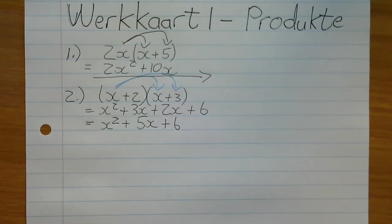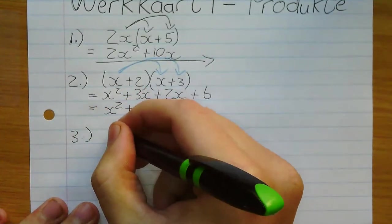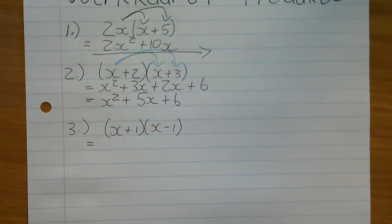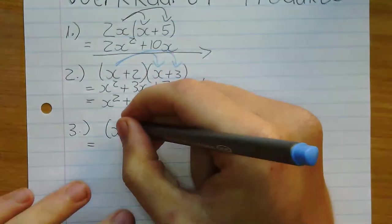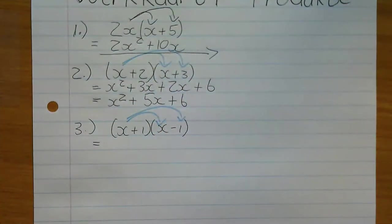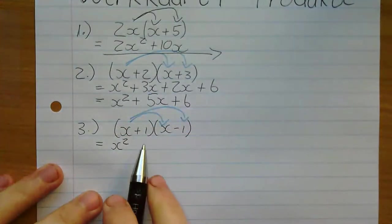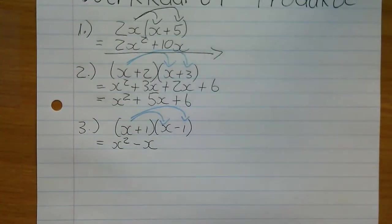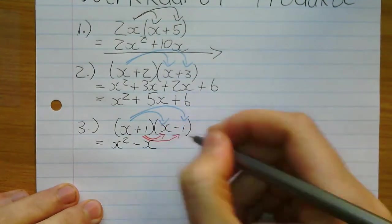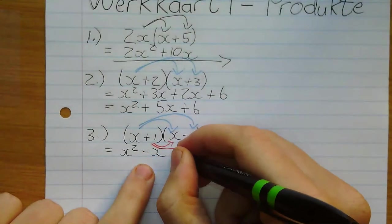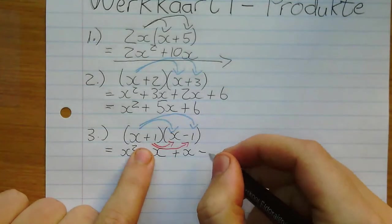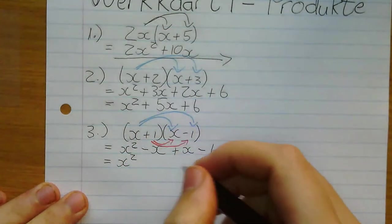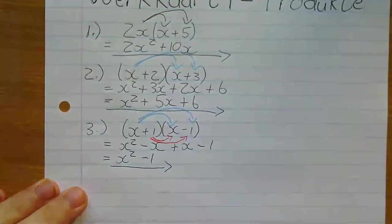Kom ons gaan aan. Vraag 3: (x + 1)(x - 1). Weer eens eenmaal - ons maal die x met elke term in die regterkantse haakies. x maal x is x kwadraat, x maal minus 1 is minus x. Maar ons hoef nie minus 1x te skryf nie. Dan maal ons die plus 1 met elke term: 1 maal x is positief x, positief maal negatief is negatief, 1 maal 1 is 1. Ons sien: minus 1 plus 1 is 0, wat bly oor is x kwadraat minus 1. Daar is jou antwoord. Volgende is vraag 4.